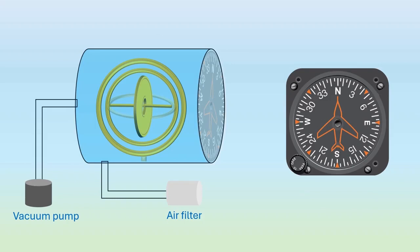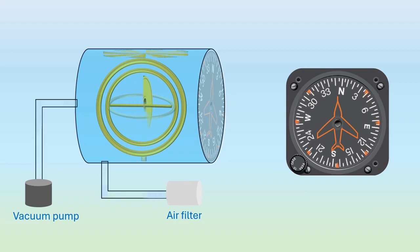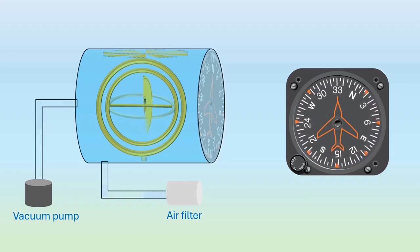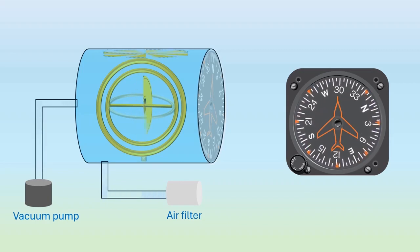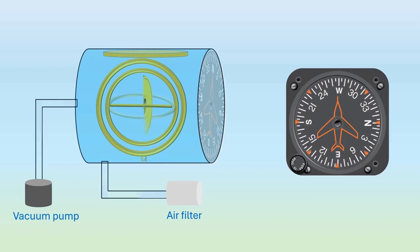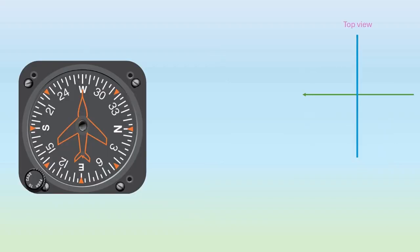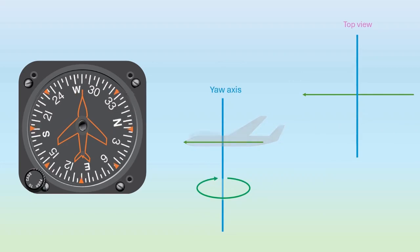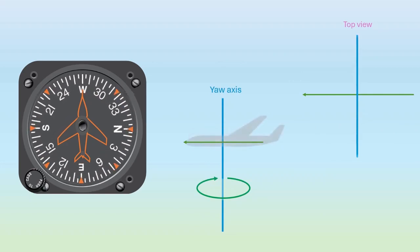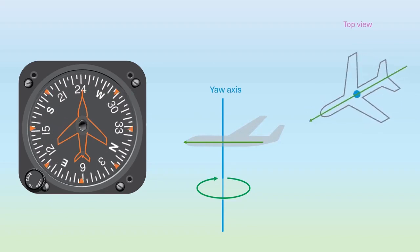Heading indicators are typically powered by vacuum, check the POH or AFM if not sure. The vacuum pump draws air to spin the gyro against the gyro vanes. While the gyro rotates along a vertical plane, the main gear that drives the compass card is horizontally oriented, and the relative position of the compass card to the gyro remains unchanged regardless of the aircraft's attitude. This setup actually makes sense when you consider the fact that the aircraft's nose moves sideways due to yawing motion. Yaw is just a fancy way of saying the airplane rotates about its vertical axis. This rotation is clearer when viewed from the top.